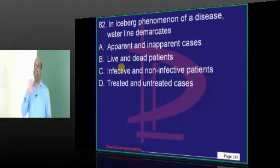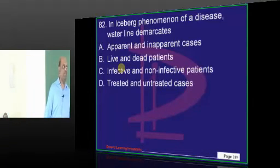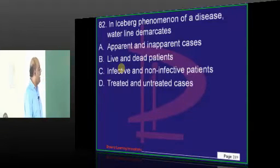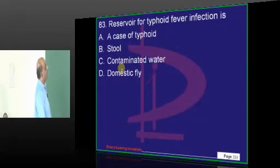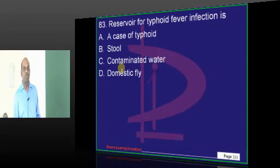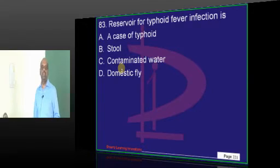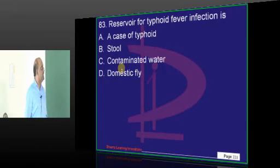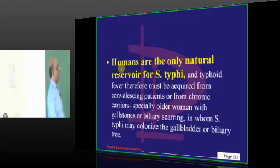What is meant by the iceberg phenomenon? It refers to the ratio between apparent and inapparent cases. What is the reservoir in typhoid infection? There are no non-human reservoirs for typhoid infection — human beings are the reservoir. A case of typhoid himself is the reservoir.